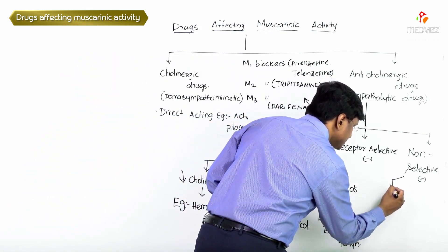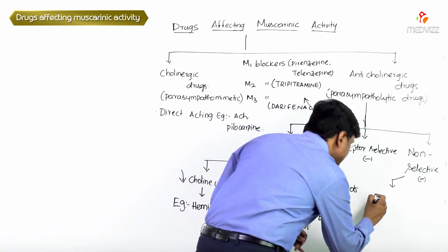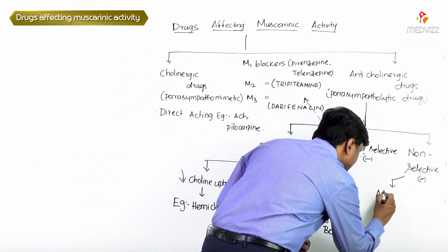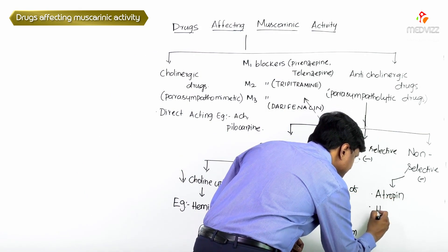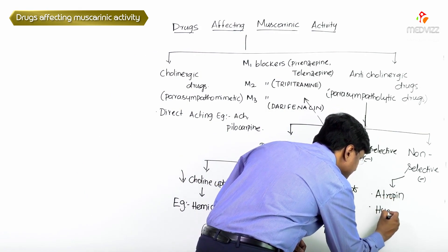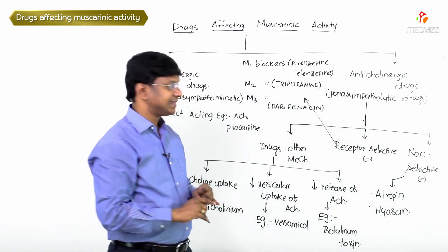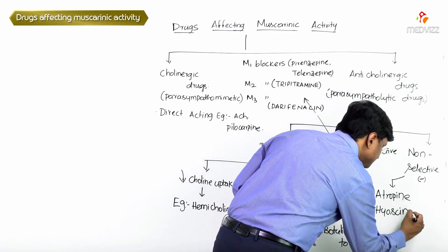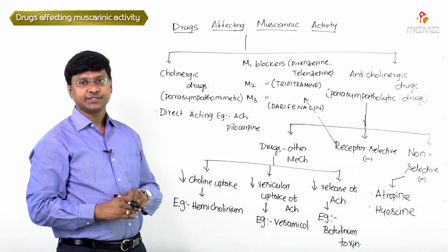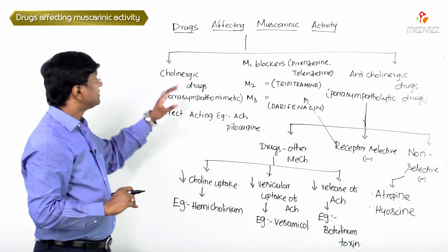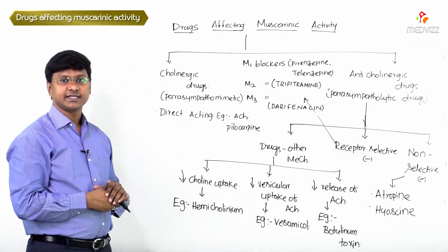The non-selective antagonists include atropine and hyoscine. Both of these are non-selective antagonists, meaning they can block any of the muscarinic receptors. These are the drugs affecting the muscarinic activity.